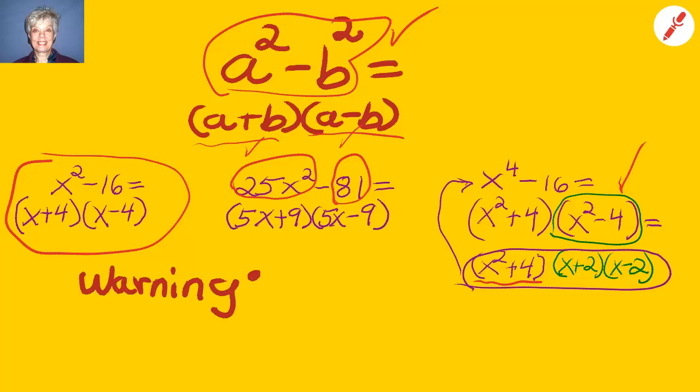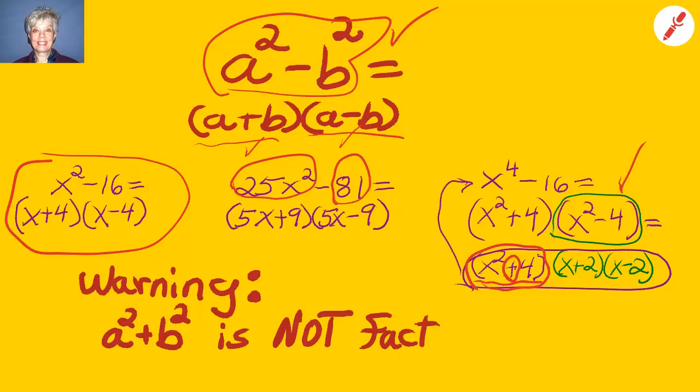Warning! If you have the sum of two squares, that is, if you have a squared plus b squared, that is not factorable. So, x squared plus 4 is not factorable because of the plus sign. x squared minus 4 is factorable because of the minus sign.